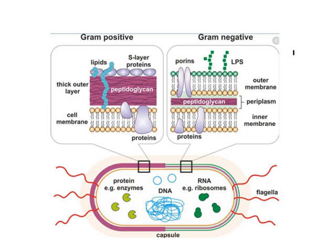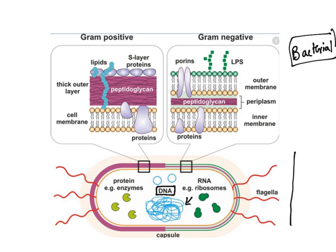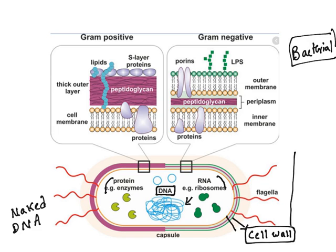I am going to explain about antibacterial agents. To understand them, we need to see the structure of a bacteria. Bacteria is a prokaryote, meaning it does not have a distinctive nucleus. DNA is readily available in the cytoplasm and chromatin proteins do not surround this DNA — hence it is also known as naked DNA. The cell contains proteins, enzymes, RNA and ribosomes, all surrounded by a cell membrane and cell wall.